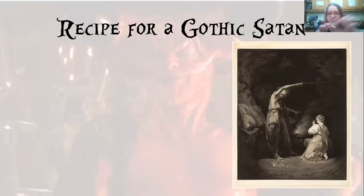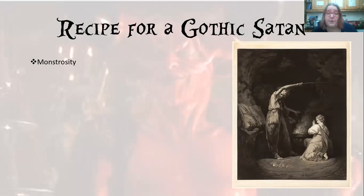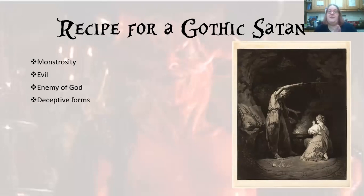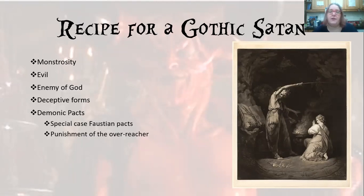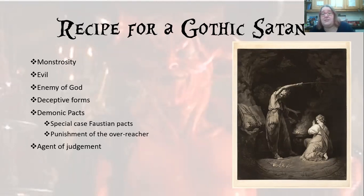Creating a recipe for Gothic Satan: the key elements these demonic depictions draw on include demonic monstrosity and visual imagery from Dante and Milton; a theologically orthodox conception of the devil as evil, directly opposed to God as a force of good; the devil manifesting in deceptive form, echoing Satan as the snake; the heritage of the Faustian demonic pact as punishment of the overreacher; the devil as an unwilling agent of judgment; and a ruined angelic nature — this sublimity of the demonic — which will return in more detail later.